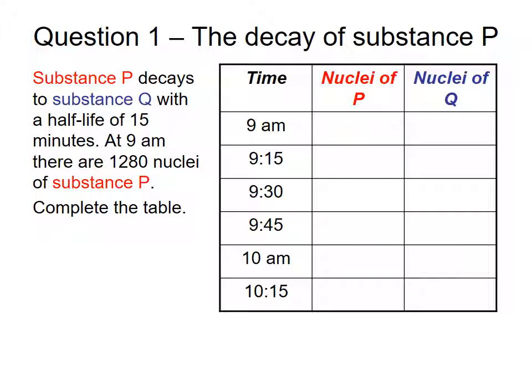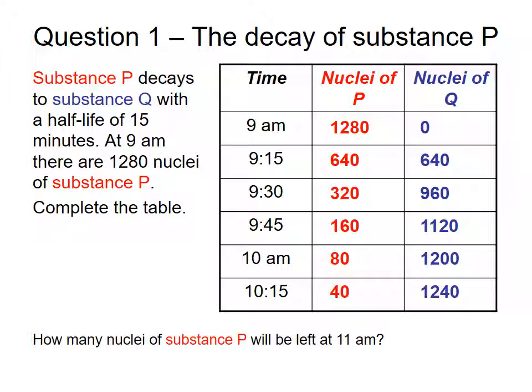Looking at now the decay of substance P. So substance P decays to substance Q with a half-life of 15 minutes. At 9 a.m., there is 1,280 nuclei of substance P. So completing the table. So 1,280 for nuclei of P at 9 a.m., 0 for Q. 9:15 is now 640 or half, and 640 for Q. 320 for P at 9:30, 960 for Q because now you've added on to the 640 that was originally there. 160 at 9:45 for 1120 of Q. And 80 at 10 a.m. to 1,200 for Q. And 10:15, 40 of P and 1240 of Q. So how many nuclei of substance P will be left after 11 a.m.? So 45 minutes later, you should have got the answer, 5.